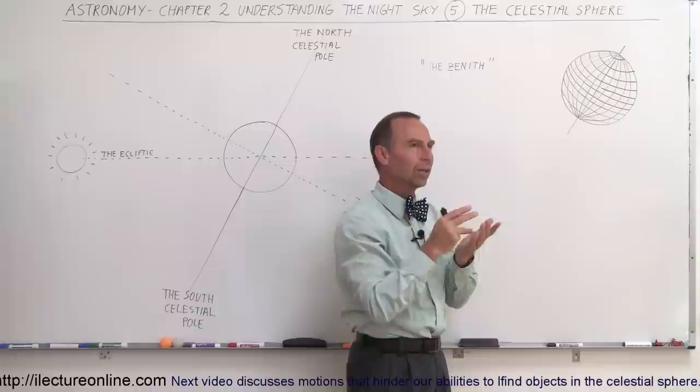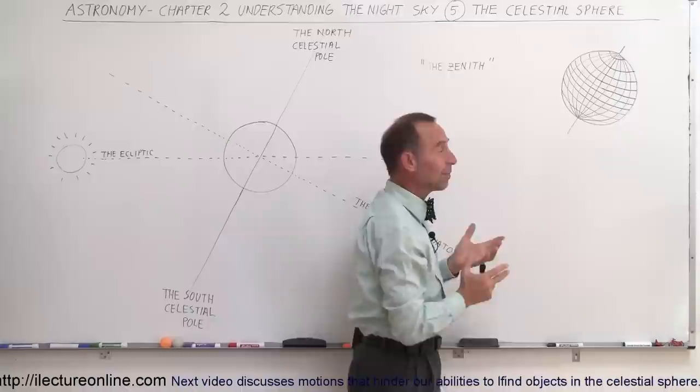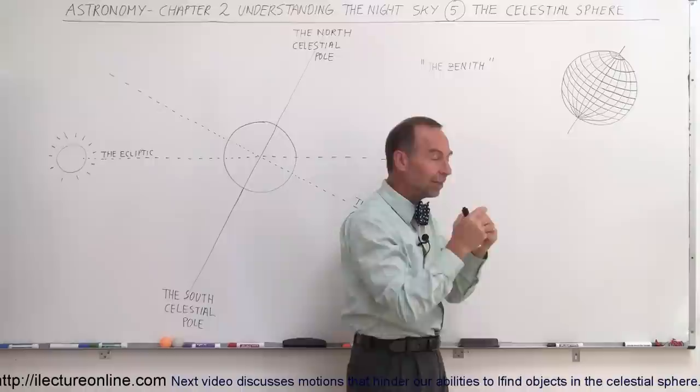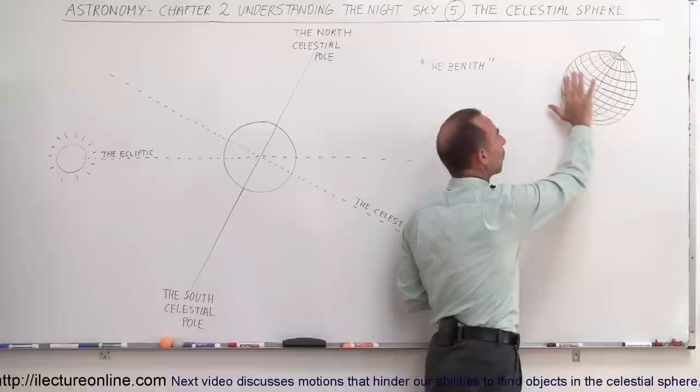We're able to find a point on the Earth using that grid system. Most people know it as GPS — a satellite system that automatically calculates, through communication with cell phones and other devices, the position of any point on the Earth relative to a grid system.